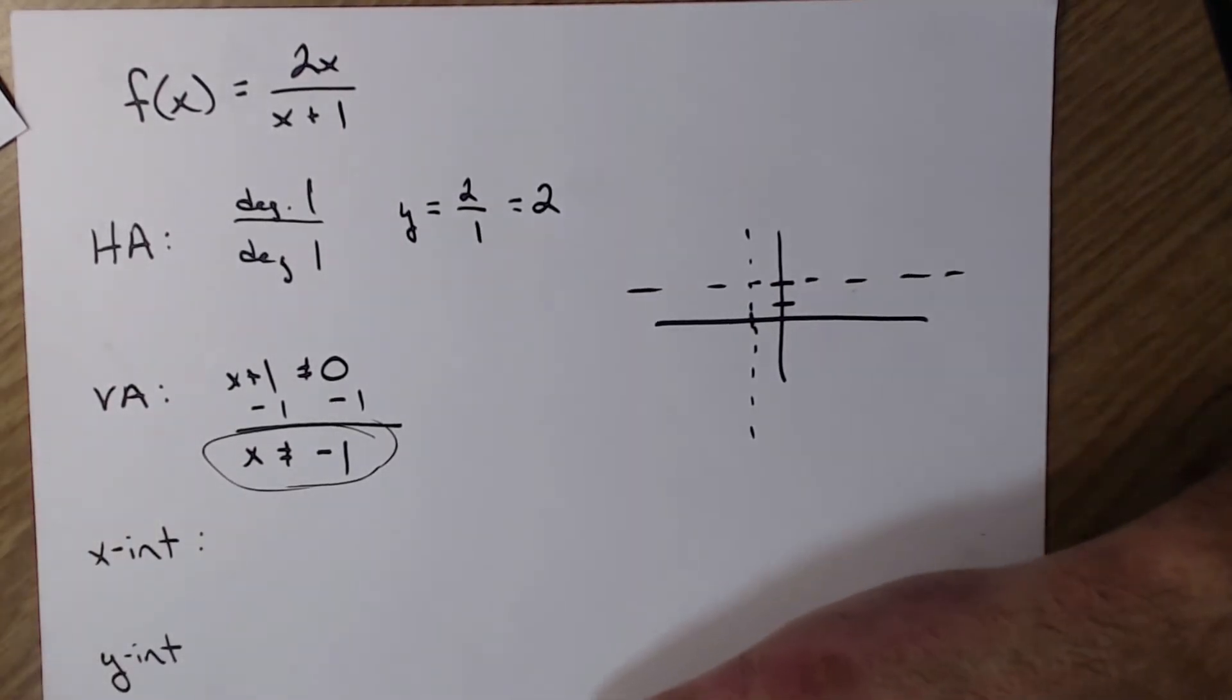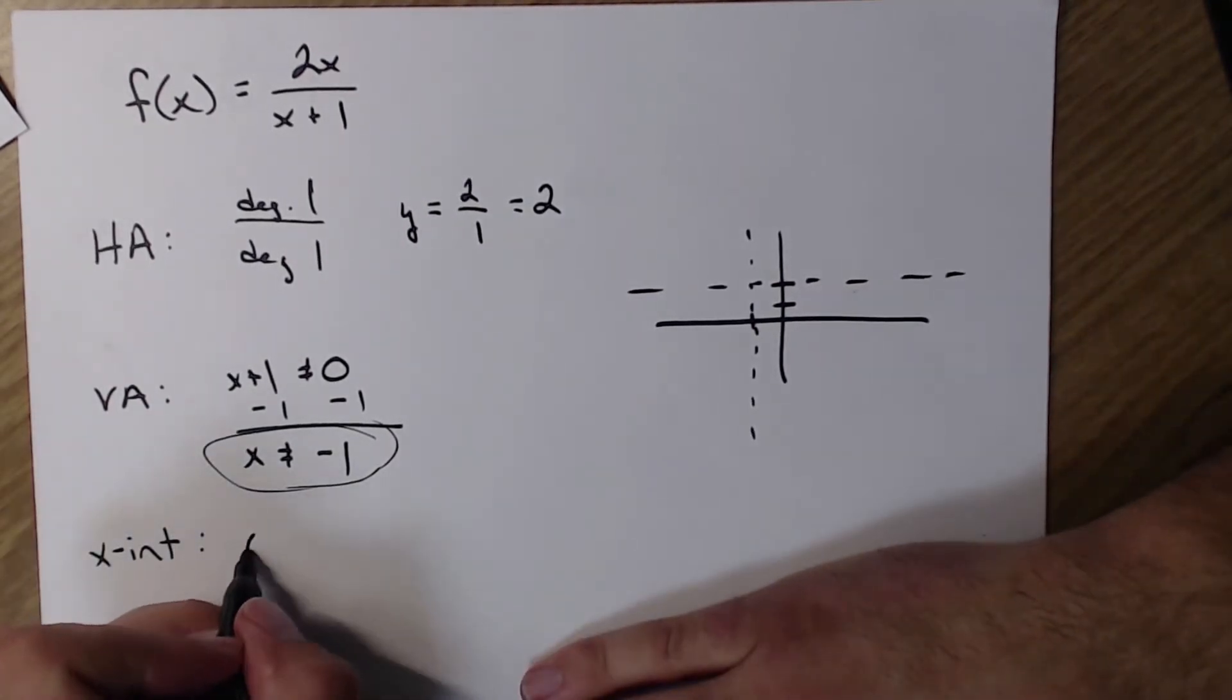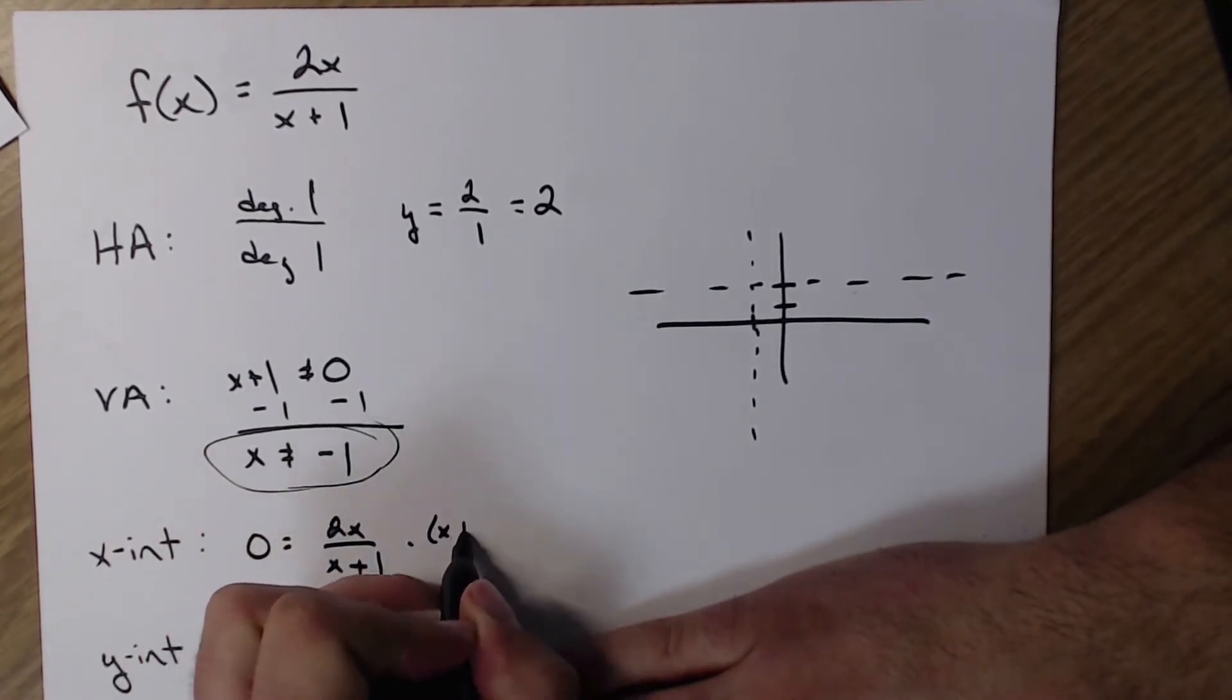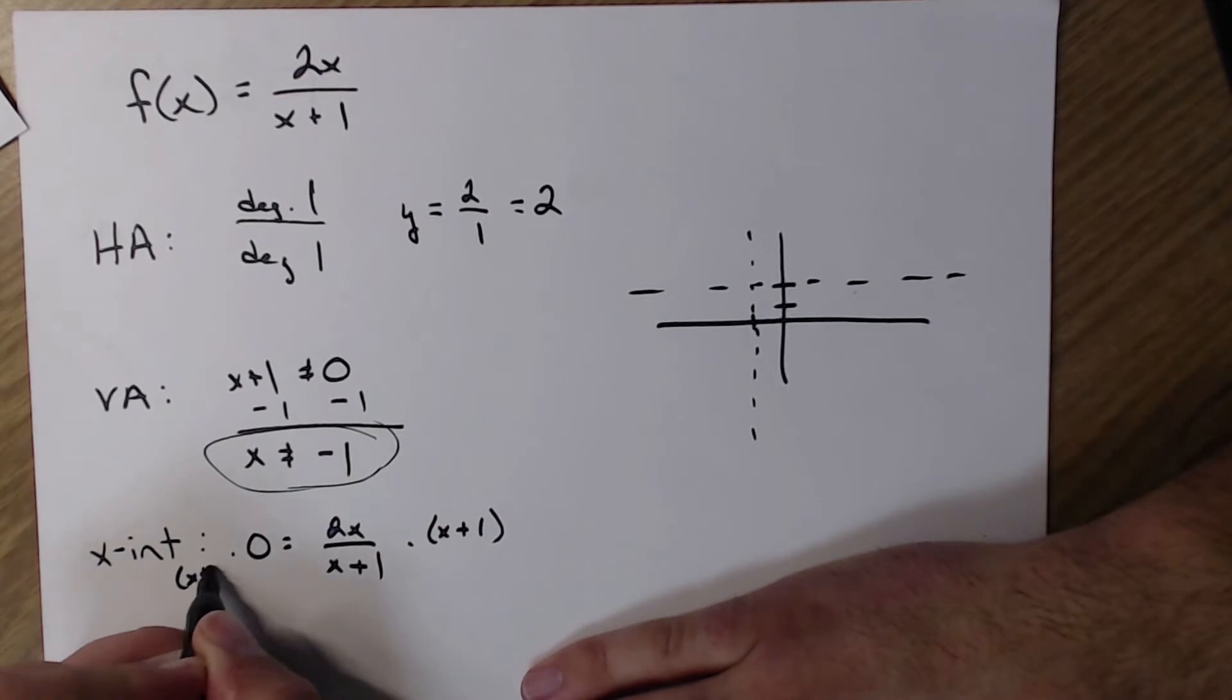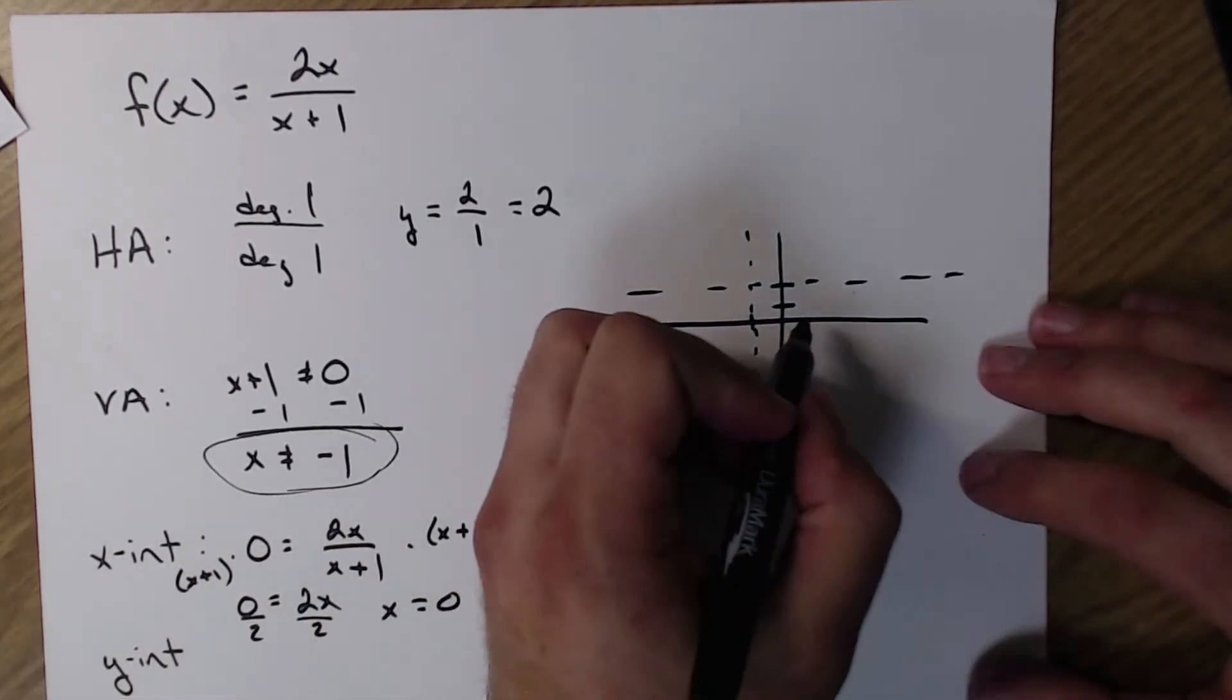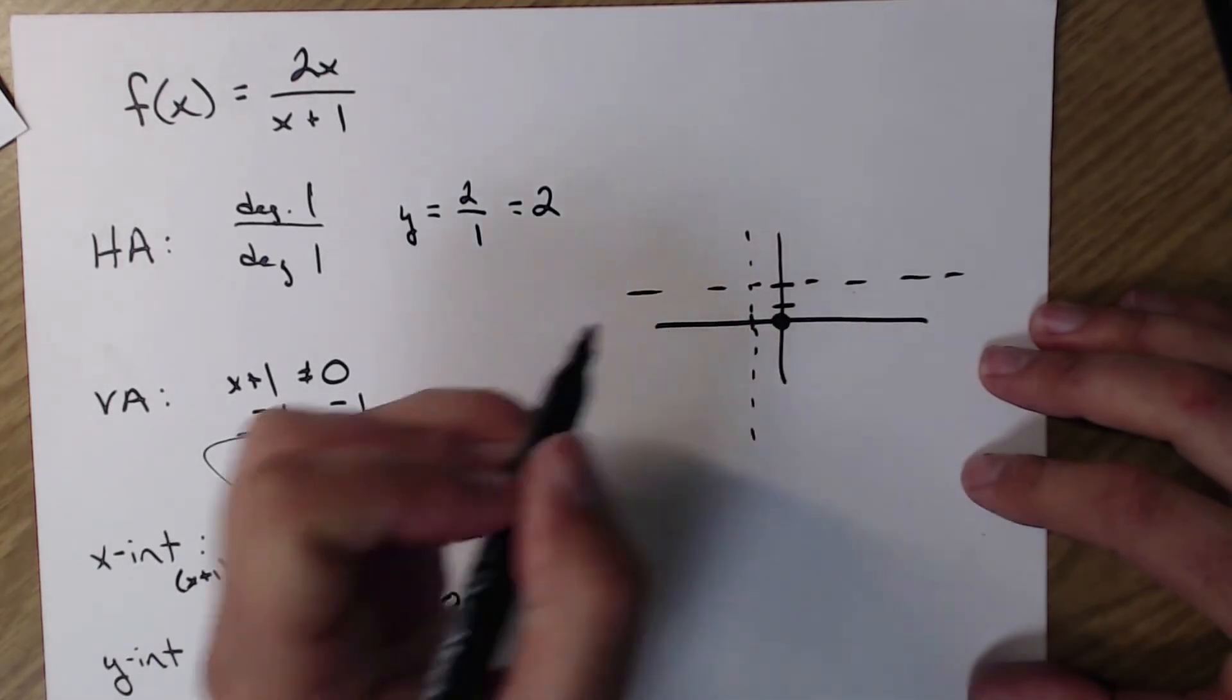Now let's find x-intercept because that's usually helpful. To find x-intercept, I set my y equal to 0. Multiply by my denominator, get rid of it. 0 times anything, still 0. So that side 0 equals 2x. Dividing by 2, I know that x equals 0 is an x-intercept. I'm going to plot that down on my graph right there.